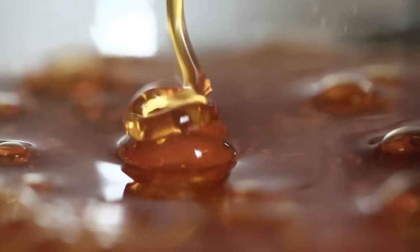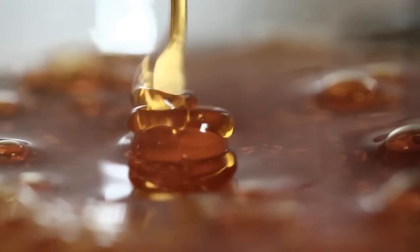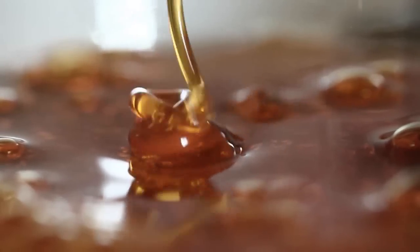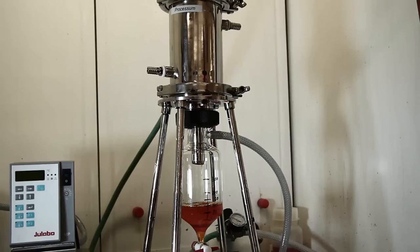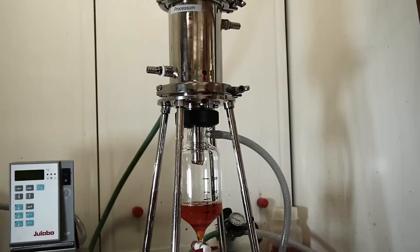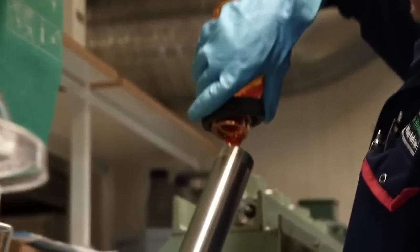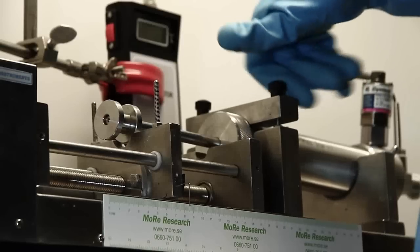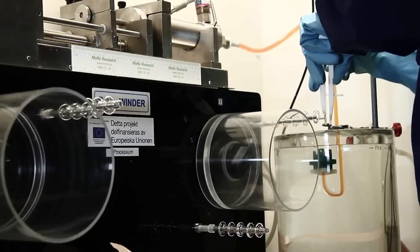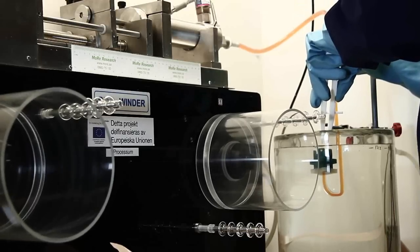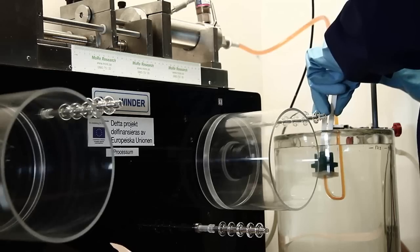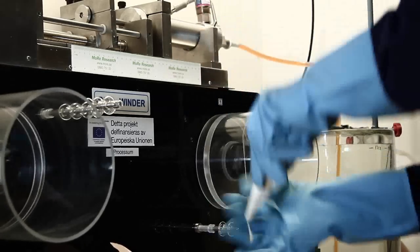The finished viscose dope is filtered to remove solid particles that otherwise will clog the spinnerets. The viscose dope is pressed through a spinneret containing small holes and out into the spin bath.